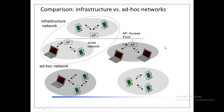Infrastructure-based networks, while useful, have limitations — for example, they cannot be used for disaster relief in cases where no infrastructure is left. In the event of an earthquake or fire, we are not able to maintain the fixed network points. This is the main drawback of the infrastructure network.